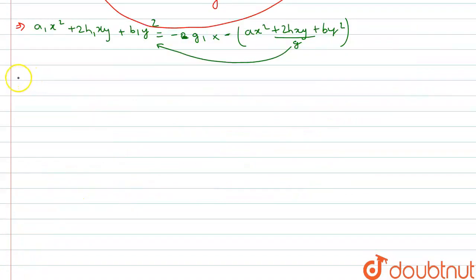So, after simplifying our final pair of equation comes out to be x square into a1g minus g1a plus y square into b1g minus g1b plus xy into 2h1g minus 2g1h equal to 0.